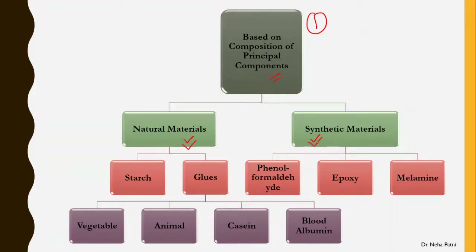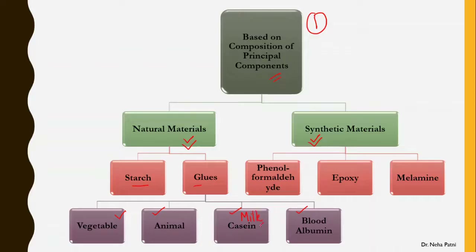So the first classification is very simple: adhesive could be natural or synthetic. For natural adhesives, the available ones are the starch and protein portions of vegetable and animal sources — casein and blood albumin. Casein is the protein portion of milk, extracted from milk and used as adhesive. Blood albumin is extracted from blood. Their strength is not as high compared to synthetic materials.